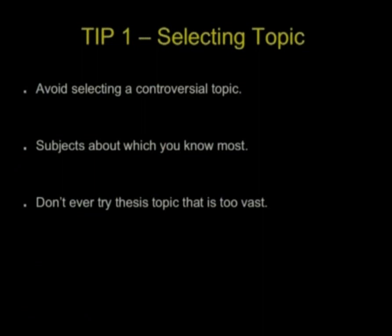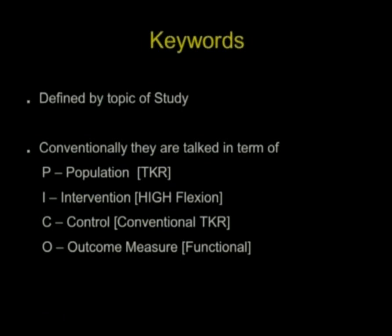Go through the previous thesis papers of your university, of your own institute. So, before we move on to selecting topics, we have been exposed to the keywords. These keywords are important in literature review, but these are also important in structuring your thesis. If they are defined by the topic of your study, and they are termed as PICO. A lot has been said about this. It's population, intervention, control, and outcome measure. If you arrange your thesis according to the PICO format, most of the format will fall into place. Keep the keywords in mind. These will help you from the beginning till the end of your thesis.